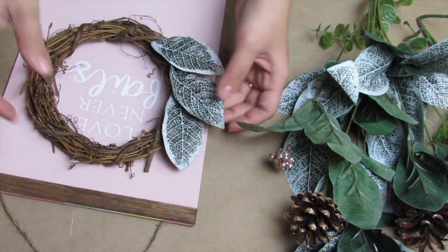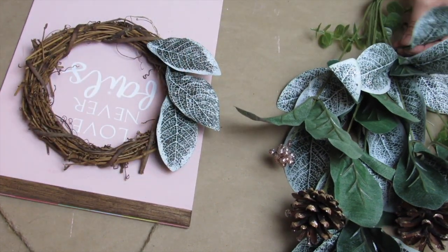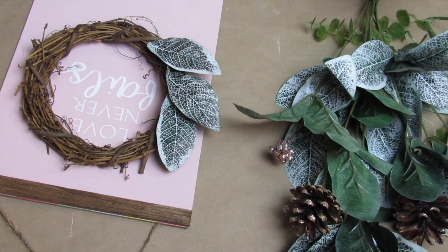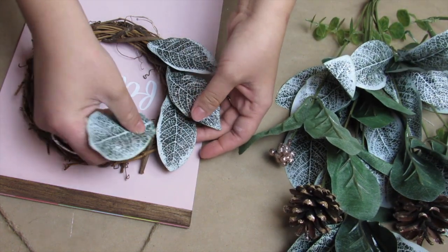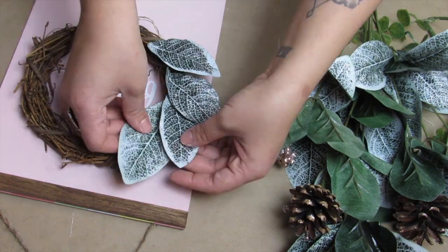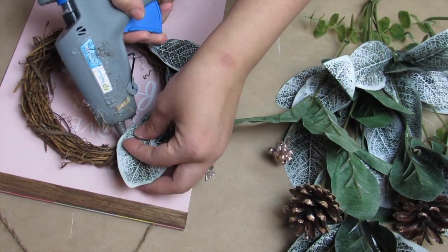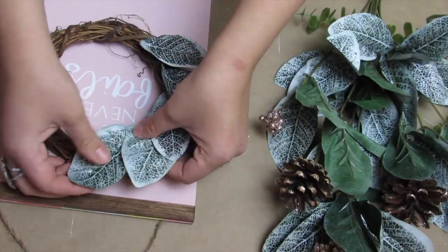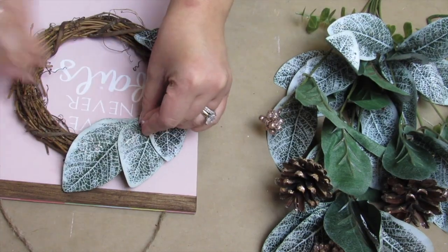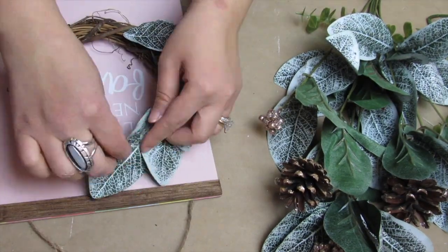I'm just taking with my scissors a leaf off at a time and kind of tucking in and resting over the previous leaf. If that does not make sense the way I'm describing it, you can clearly see what I'm doing. I'm just playing with the placement and using some hot glue as needed. You want to make sure that you fold back the green leaves so that you're not covering the font.